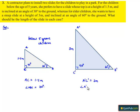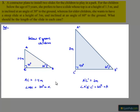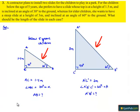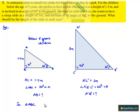We are asked to find the length of the slide in both cases, meaning we need to find AB and A'B'. Considering triangle ABC, we have a height of 1.5 meters which is opposite to 30 degrees, and we need to find the hypotenuse AB. Therefore, we use the appropriate trigonometric ratio, which is sine.